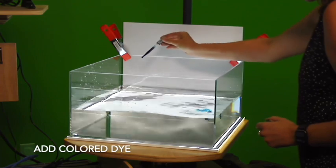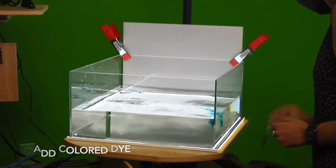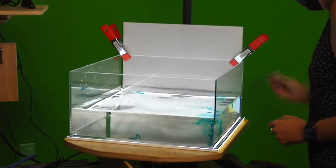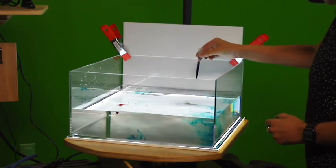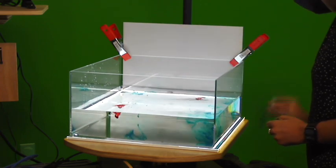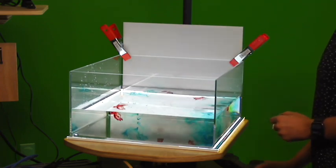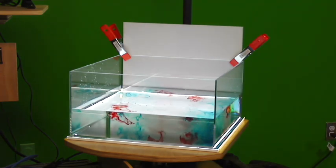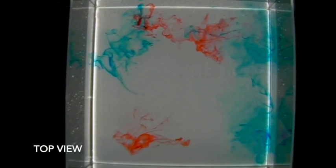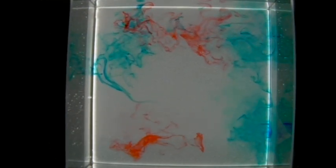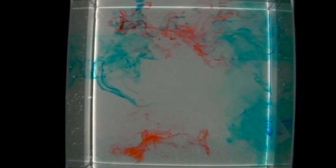We add colored dye so that we can visualize the flow. As we see, the colored dye is starting to spread throughout the tank but it's not doing so in any particular pattern.